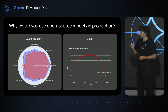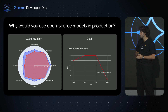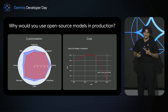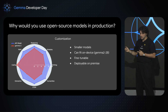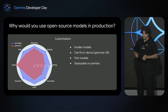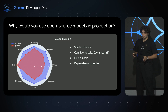But today, the talk is about production. So why would you use an open source model in production? From my interactions with clients, I see two use cases. The first one would be customization, and the second one would be cost effectiveness. On customization, while Gemma 2 is a very strong model considering its size, where it really shines is once it is fine-tuned on a specific domain.